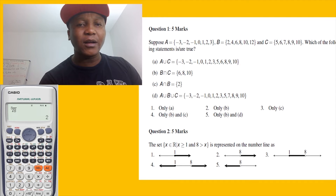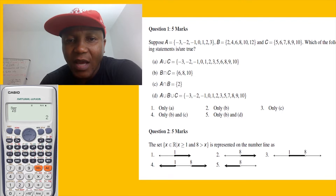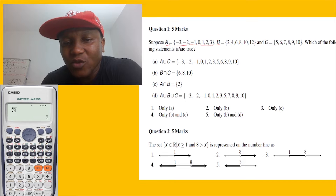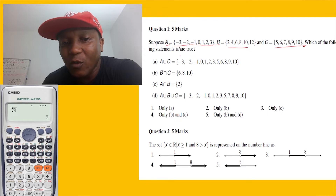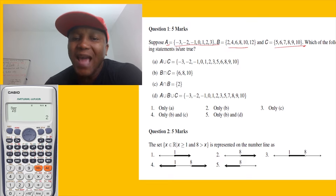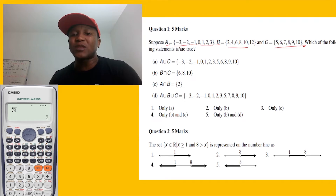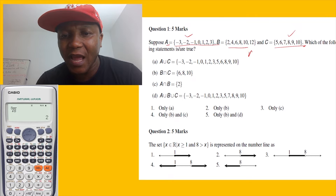The first question gives us: set A is from negative three to three, set B equals a certain set, set C equals another set. Which of the following statements are true? A union C — when I say A union C, I mean A and C put together.